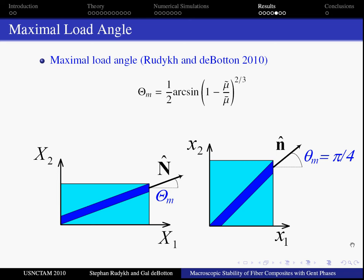The maximal angle corresponds to the case when the critical compression in the fiber direction is achieved right at the point when the fibers are rotated at the angle of one-fourth of pi in the current configuration. Consequently, any compression applied at an angle higher than θm will never lead to failure.